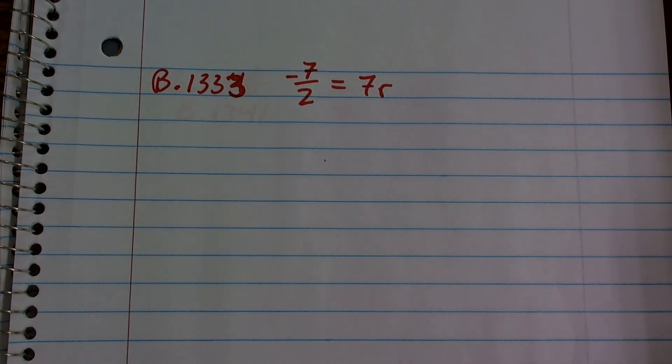All right, now we're getting a little fun here. We got some a little bit difficult numbers here. I have a negative 7 divided by 2 is equal to 7 times r.